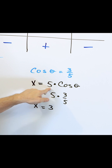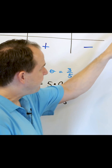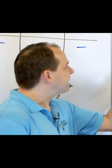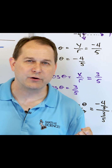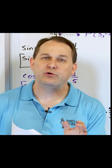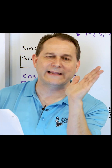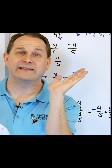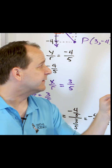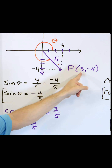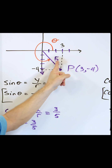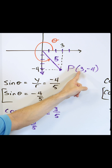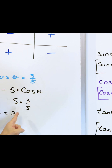If you take the hypotenuse of the problem and multiply by the cosine of the angle, then what you're doing is chopping that hypotenuse to get the x component. The x component here is 3, so when you take this and multiply by the cosine, you actually get 3.